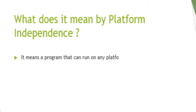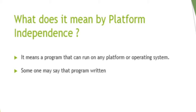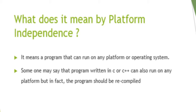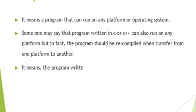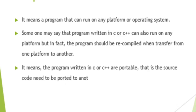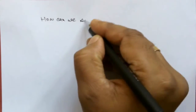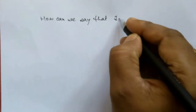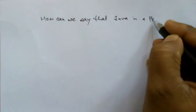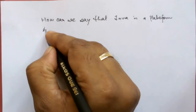Platform independence means a program that can run on any platform or operating system. Someone may say that a program written in C or C++ can also run on any platform, but in fact the program must be recompiled when transferred from one platform to another. This means C or C++ programs are portable — the source code needs to be ported to another platform and compiled to make it executable. So how can we say that Java is a platform independent language?